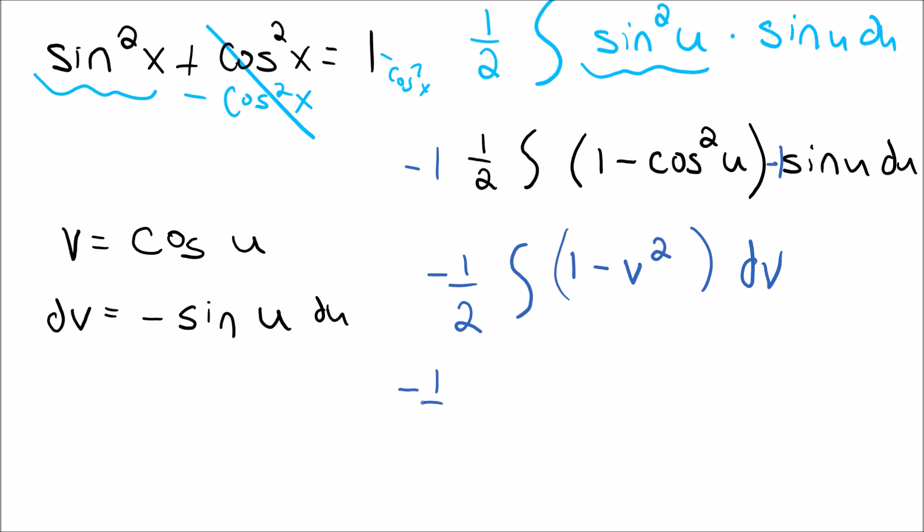So I'm going to go ahead and do that. So this would be negative 1 half times the integral of 1 in terms of v would just be v. And then minus this would be v to the third over 3. So we get all of that. And then of course, we're gonna have to put our plus c out here.